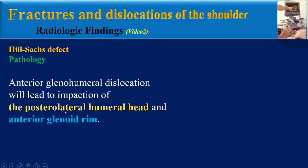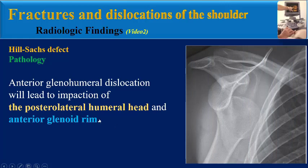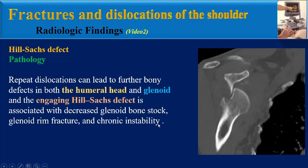What is the pathology of Heel Socks defects? Anterior galano-humeral dislocation will lead to the impaction of the posterolateral humeral head and anterior galanoid rim. Repeat dislocations can lead to further bony defects in both the humeral head and galanoid, and the engaging Heel Socks defect is associated with decreased galanoid bone stock, galanoid rim fracture, and chronic instability.